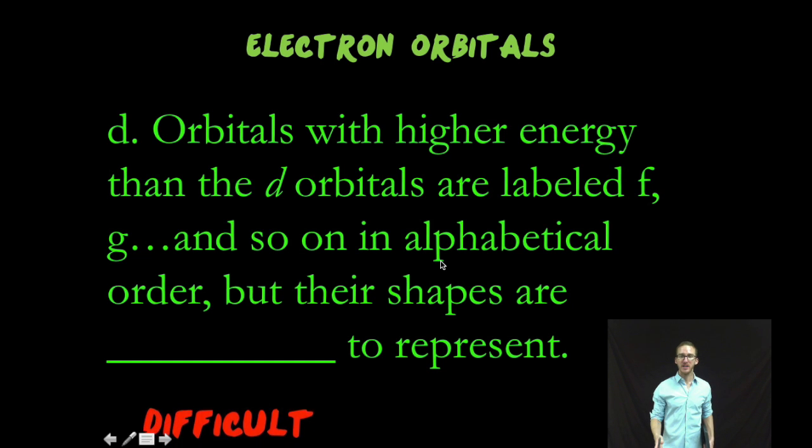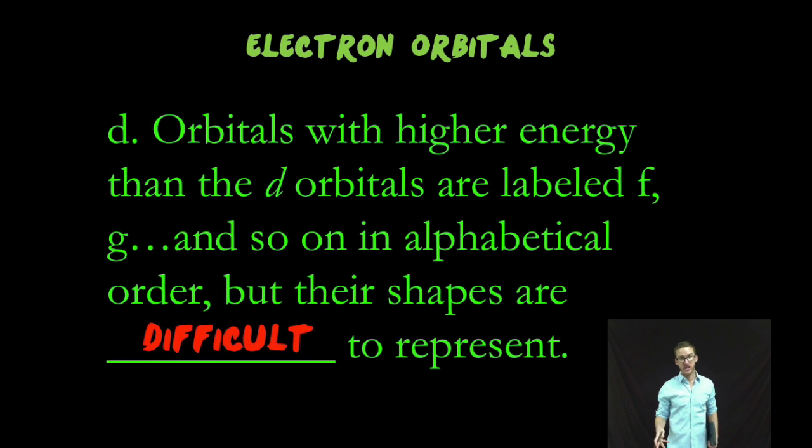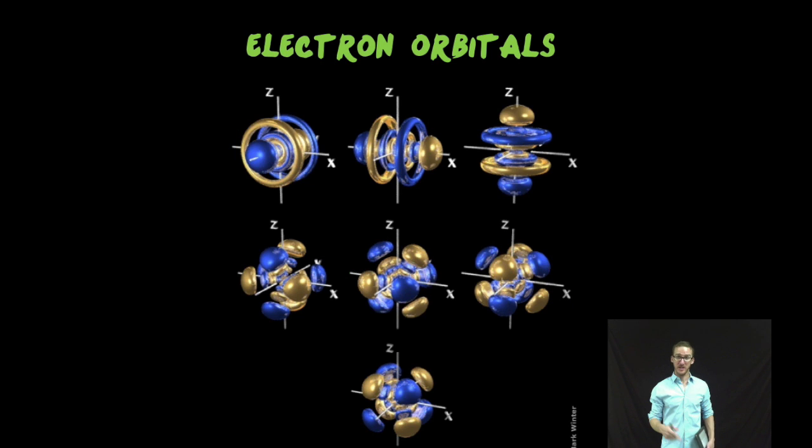Now, orbitals with higher energy than the D-orbitals are labeled F, G, and so on in alphabetical order. But their shapes are a little more difficult to represent. For example, here are the seven F-orbitals that correspond to the inner transition metals on your periodic table.